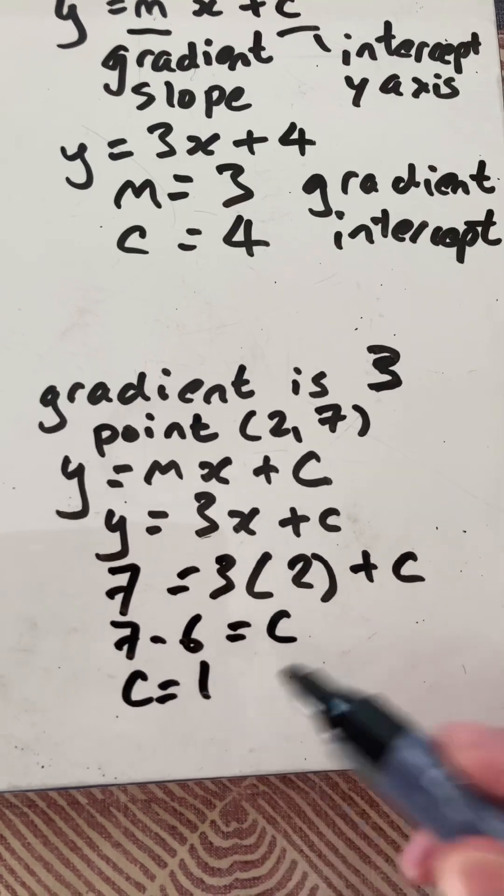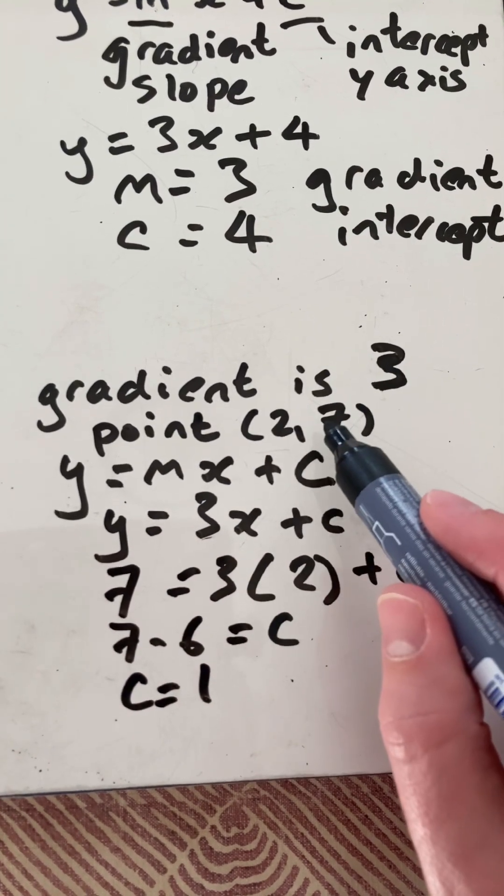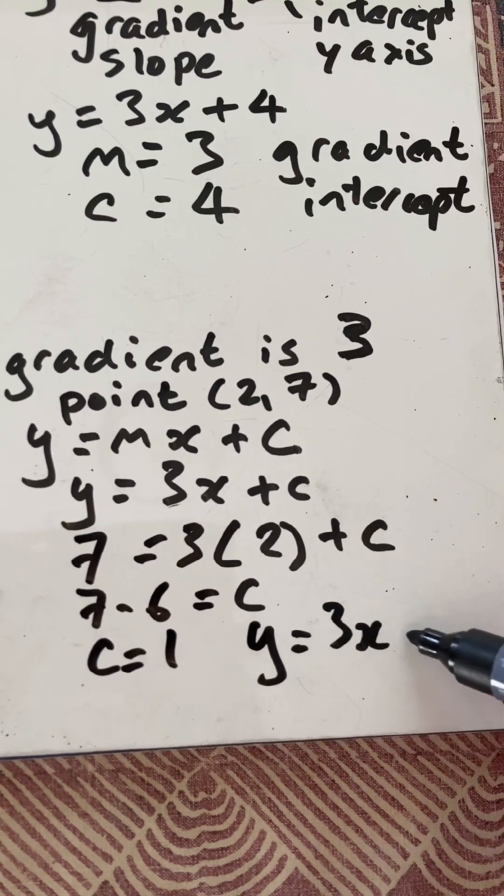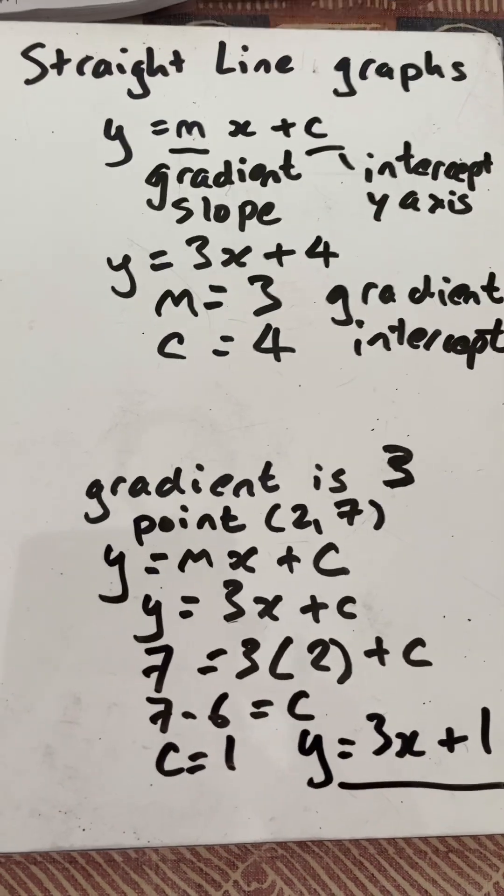So c is 1. So the equation of the line that goes through the point (2, 7) and has a gradient of 3 is y equals 3x plus 1. There you go. That's a short on straight line graphs. Thanks for watching.